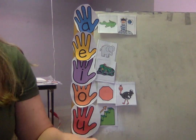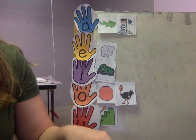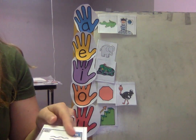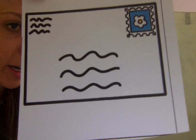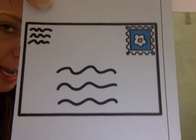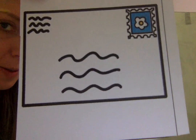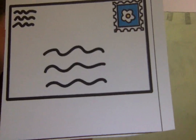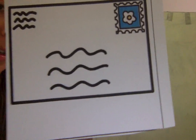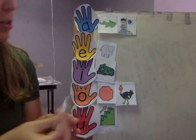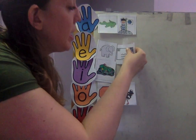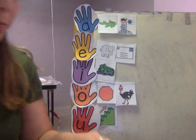This one's kind of tricky. The next picture is a picture of an envelope. Isaac — envelope. 'Eh, eh, envelope.' E. Good job! Envelope starts with the letter E for the 'eh, eh, envelope' sound.